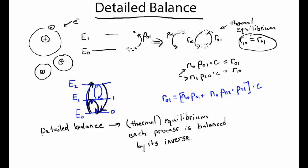If we can make the assumption of detailed balance, then we can set N0·P01·C equal to N1·P10·C, and we find that we can solve for the relative populations in each state simply on the basis of ratios of transition probabilities. This is not affected by whatever is going on with energy level 2.